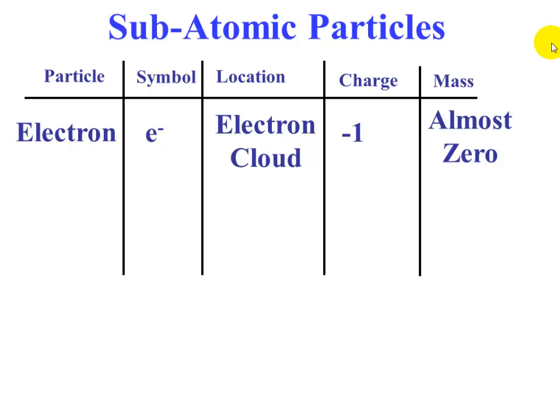The next particle is the proton. Its symbol is p+. The location of the proton is in the nucleus. Its charge is exactly opposite that of an electron, +1, and the mass of a proton is 1 amu. AMU stands for atomic mass unit.